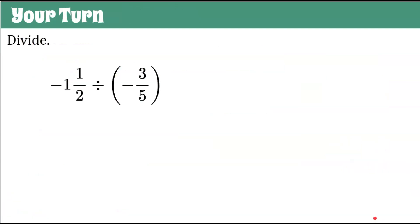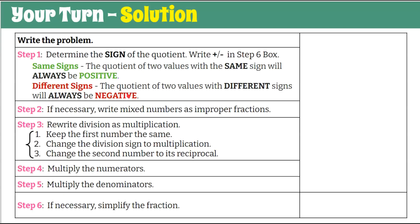Here's your last practice problem for today's video. Divide negative one and one-half by negative three-fifths. Go ahead and pause and see how you do with your six steps. Welcome back. Step one: determine the sign of the quotient. We have same signs — negative divided by negative — so the quotient is positive. Record that positive sign so we can't forget.